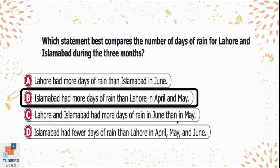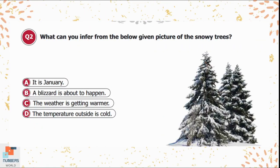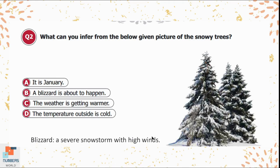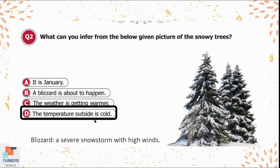Question 2: What can you infer from the picture of snowy trees? Option A says it is January — we cannot guess the month. Option B says a blizzard is about to happen — a blizzard is a severe snowstorm with high winds, but 'about to happen' means it hasn't occurred yet. Option C says the weather is getting warmer. Option D says the temperature outside is cold — option D is the only suitable answer.